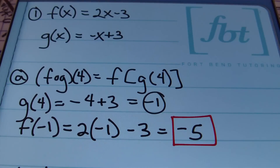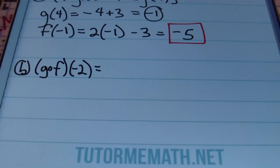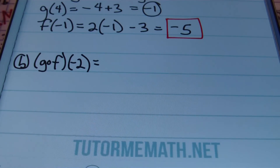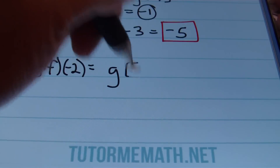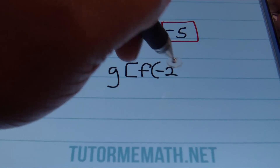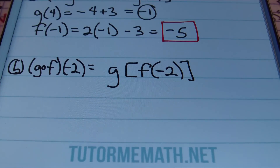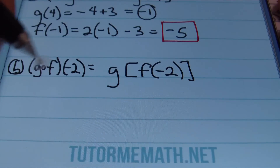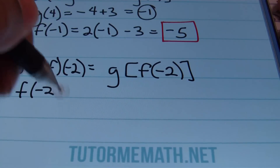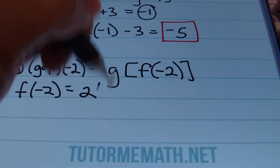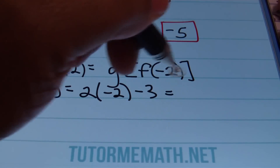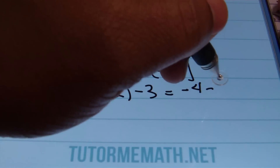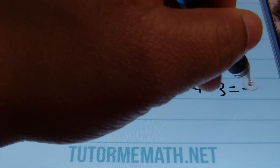In part B, they want us to find G composite F of negative 2, which means G of F of negative 2. I don't know what F of negative 2 is yet, so I'll find that first. Plugging negative 2 into our F function, we have 2 times negative 2 minus 3. So 2 times negative 2 gives me negative 4, minus 3, which equals negative 7.